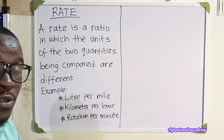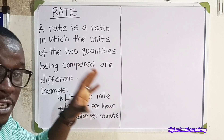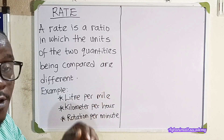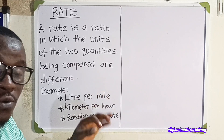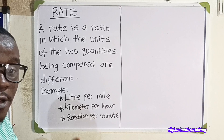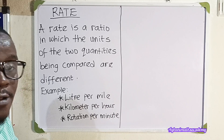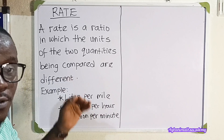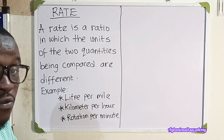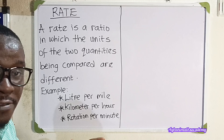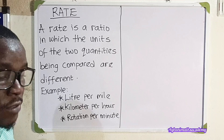So, the basic difference between ratio and rate is: for ratio, we compare values that are similar. For rate, we are comparing two values that are different.